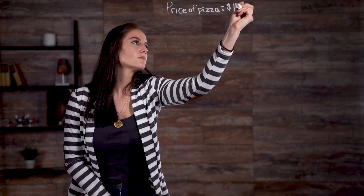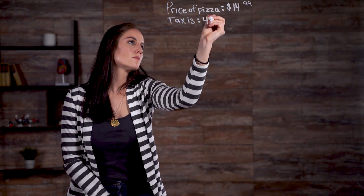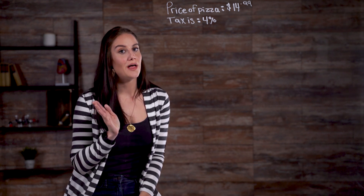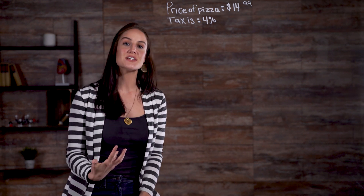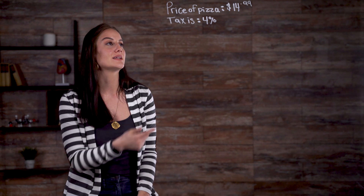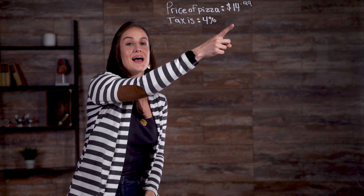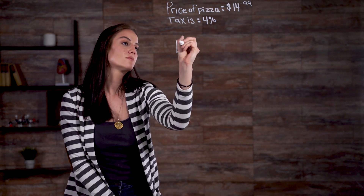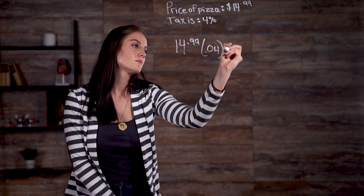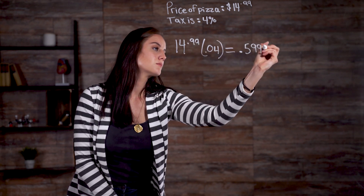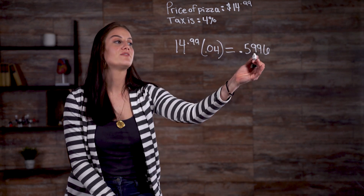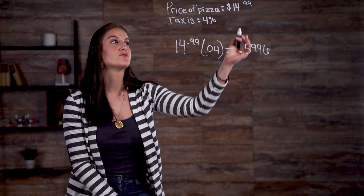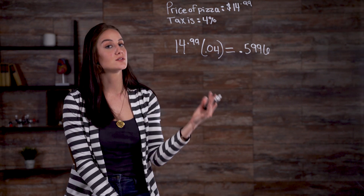How much tax will add to the bill? First, we need to determine how much our tax will add onto the bill. To do this, we need to multiply 14.99 by 4%, or 0.04. Next, we need to add 0.5996, our tax, to 14.99, our total.